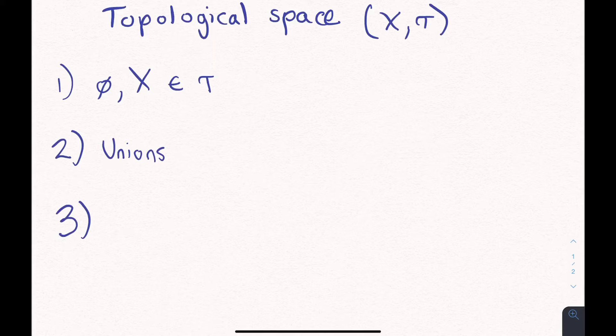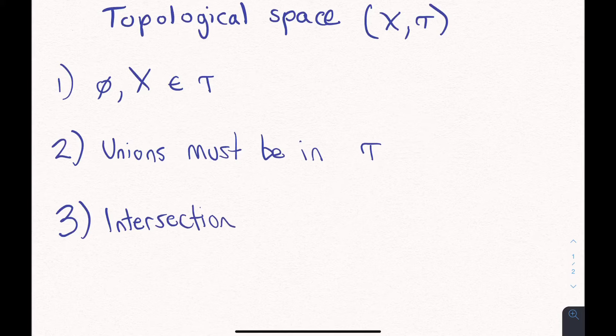And the third one is that any finite intersection, that is, if you take a finite number of subsets in Tau, then the resulting subset, when you take the intersection of all these subsets, must remain in Tau as well.